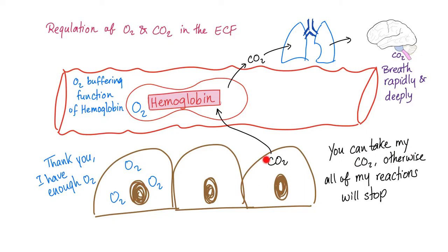On the other hand, if you have lots of carbon dioxide in the tissue, the cells will hand it to the hemoglobin — please take care of this CO2 — and it will carry it to the lungs. Your lungs will exhale the carbon dioxide out. When CO2 is abundant in your blood, the brainstem is stimulated, so you will breathe rapidly and deeply to get rid of this CO2. By the way, this is called the oxygen buffering function of hemoglobin, which is indeed astonishing.